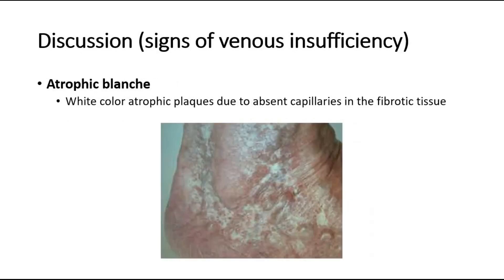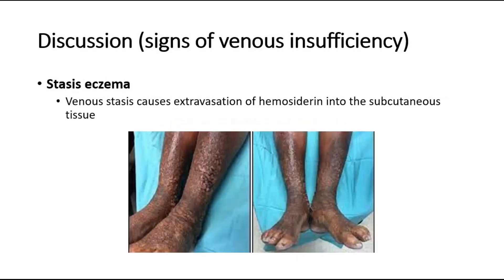Atrophie blanche are white-colored atrophic plaques due to absent capillaries in the fibrotic tissue, as shown in this picture. Stasis eczema occurs when venous stasis causes extravasation of haemosiderin into the subcutaneous tissue, causing discoloration.